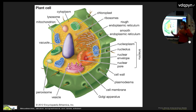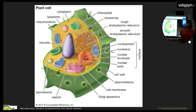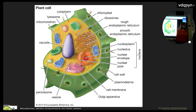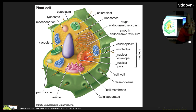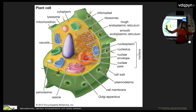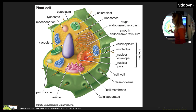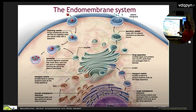The large central vacuole is adaptive for a plant because it fills up with water to push against the cell wall, giving it rigidity. When the cell wall pushes back, that's called turgor pressure, which prevents a plant cell from bursting in a hypotonic environment. Water flows from a hypotonic environment into the plant, which would be hypertonic.